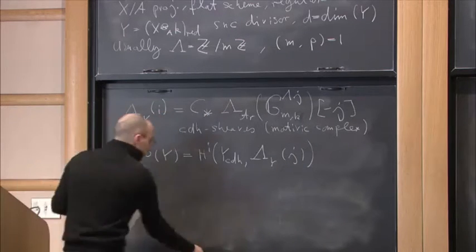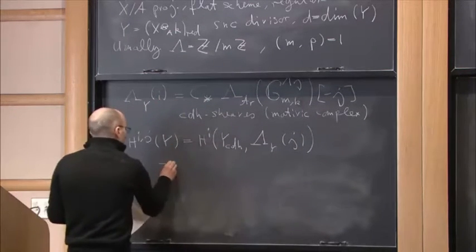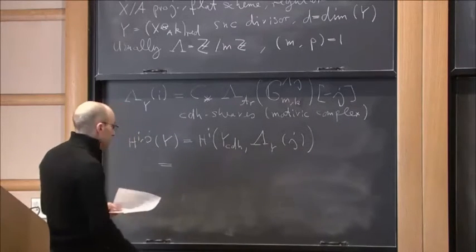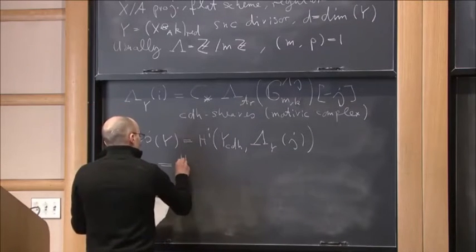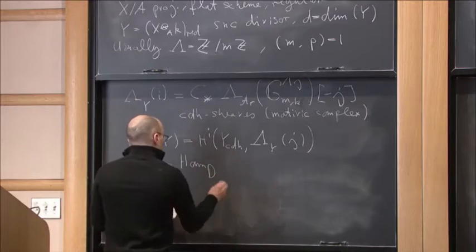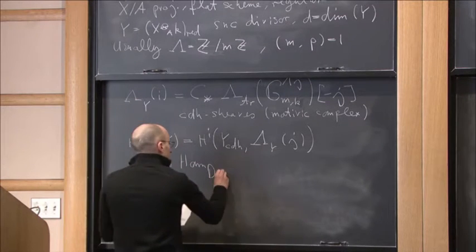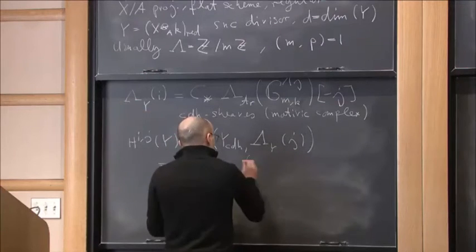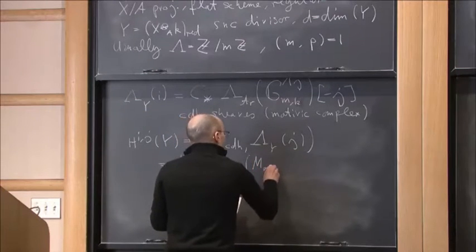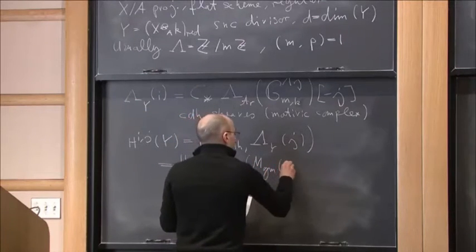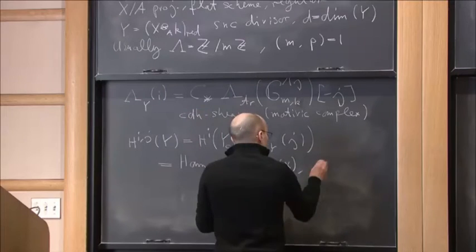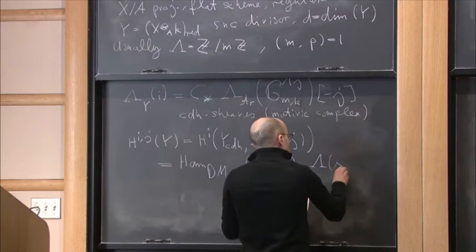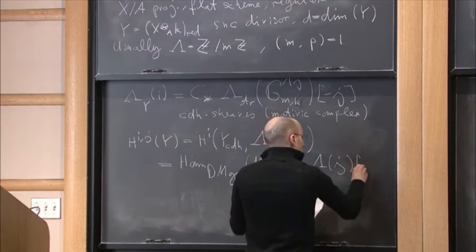This is the motivic complex defined by Suslin and Voevodsky. We define motivic homology of Y in bi-degree (i,j) as just the hypercohomology of this complex over the CDH site of Y. By results of Voevodsky and Shane Kelly, you can also interpret this as a Hom from inside a certain triangulated category DM, from the motive of X to the Tate motive λ(j) shifted by i.